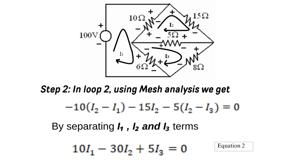Step 2 — In loop 2, using mesh analysis: −10(I2 − I1) − 15·I2 − 5(I2 − I3) = 0. Separating I1, I2, and I3 terms gives: 10·I1 − 30·I2 + 5·I3 = 0. This is Equation 2.